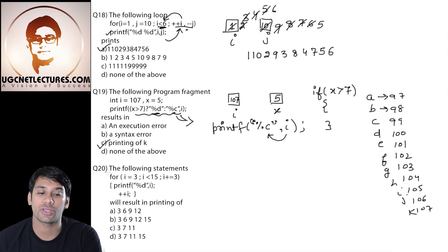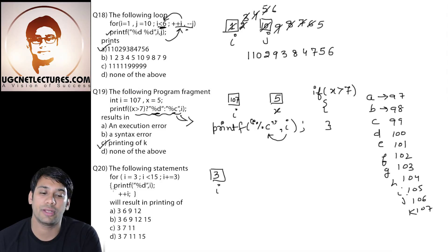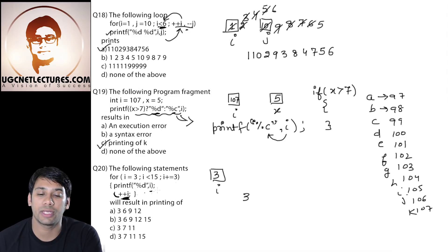Now check question number 20. In this question, we are having variable i, initialized with the value 3. The condition 3 is less than 15, so we will go to the printf statement and print the value of i — first it prints 3. Then it increments the value of i here, making i equal to 4. After incrementing, it will come to this statement which increments the value of i by 3, so the value of i is now 7.